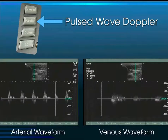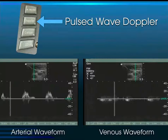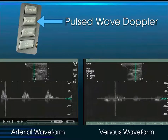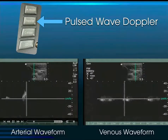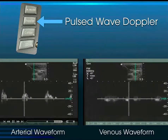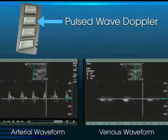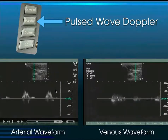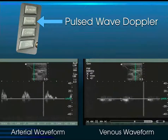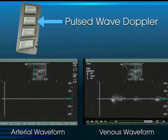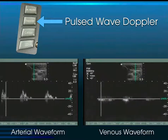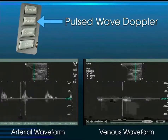Then there's pulsed wave Doppler, sometimes called spectral Doppler. After depressing the Doppler button you get a sampling gate, and you can direct where you want that sampling gate. In this case it's over the subclavian artery, giving an arterial waveform. These are called velocity waveforms — the peak of this spike corresponds to 20 centimeters per second. Over here, the subclavian vein appears as a much lower flow state, up to approximately 10 centimeters per second.